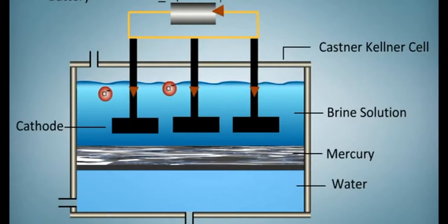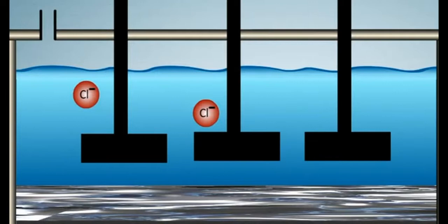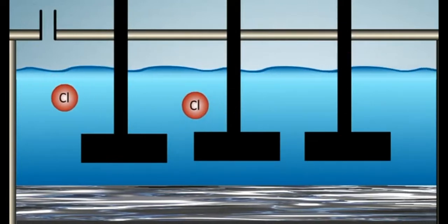At anode, chloride ions are reduced to chlorine atoms by electrons.